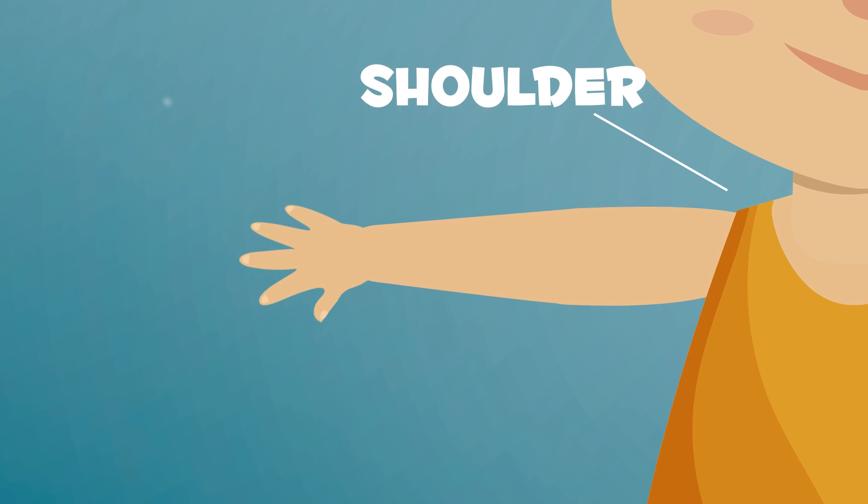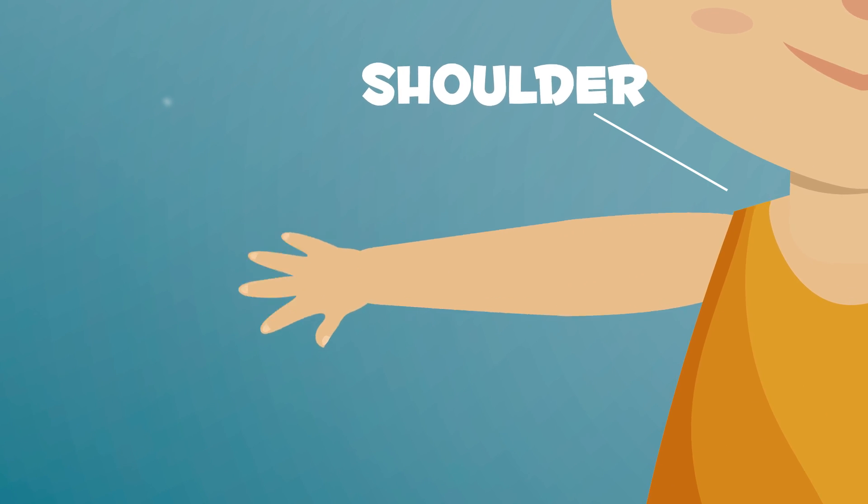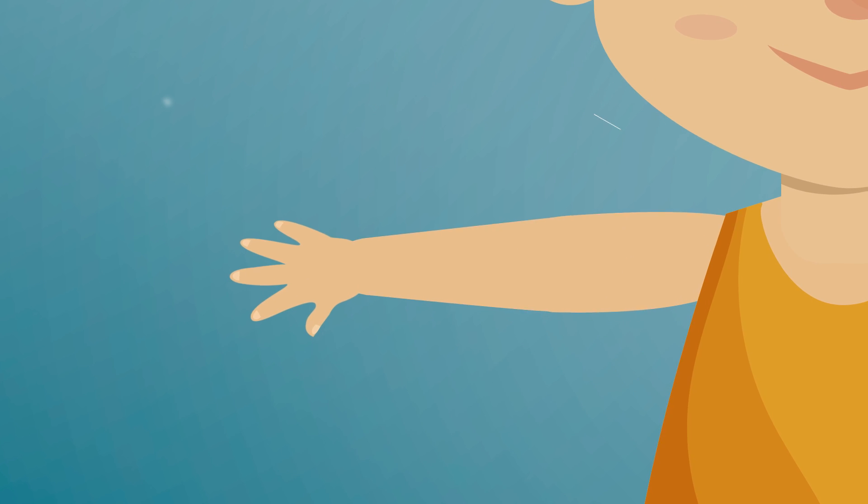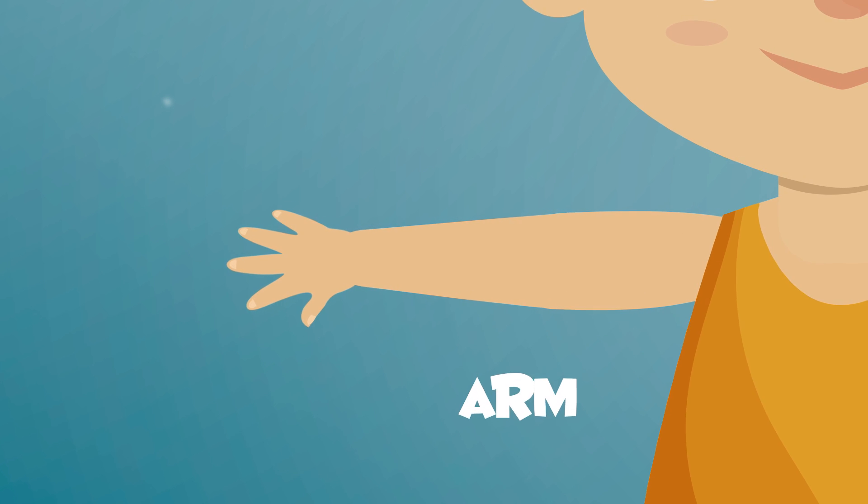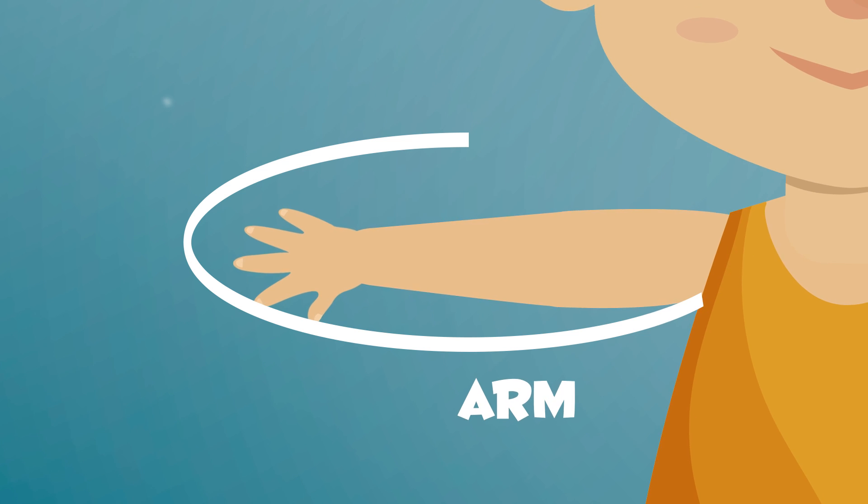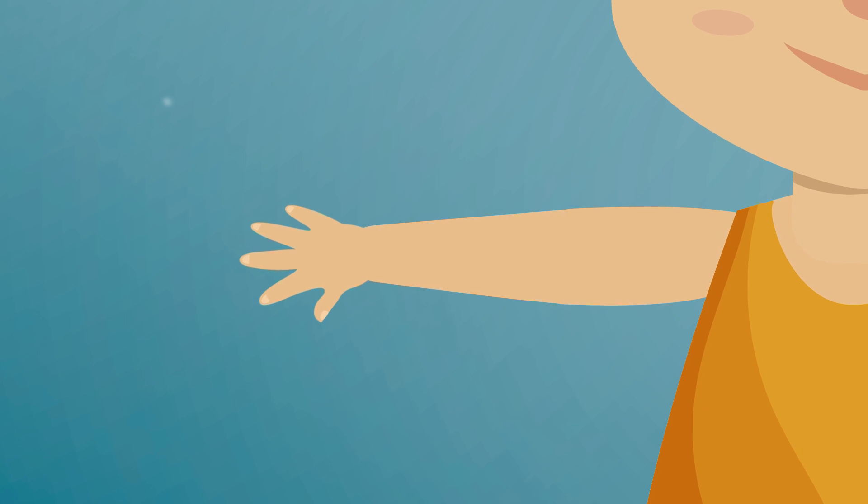Your joints allow you to move the parts of your body. Your upper limbs are your arms. Your arm is connected to the trunk by your shoulder. You can find your elbow, wrist, hand, fingers and nails on your arm.